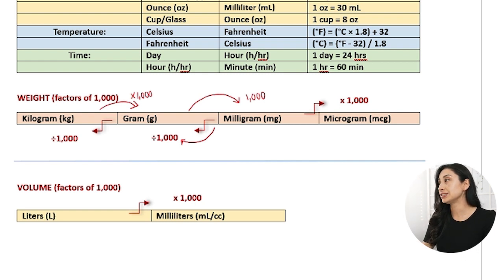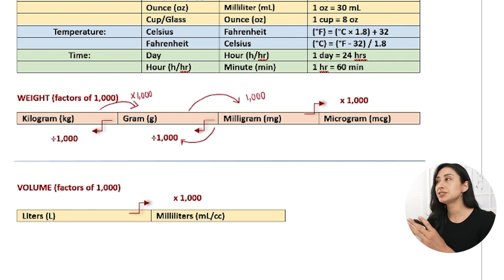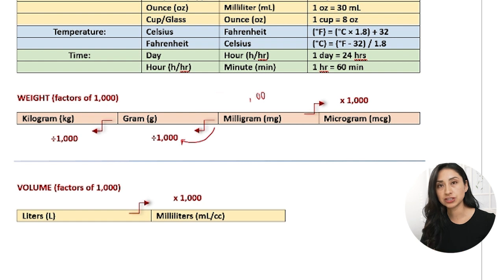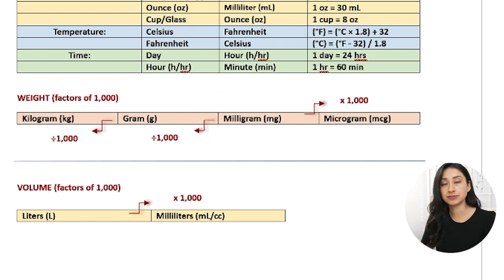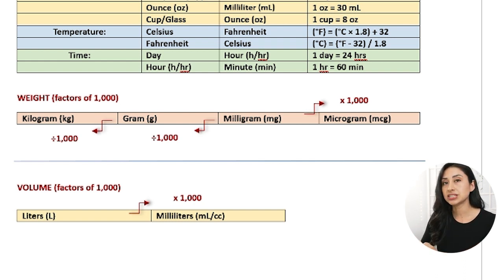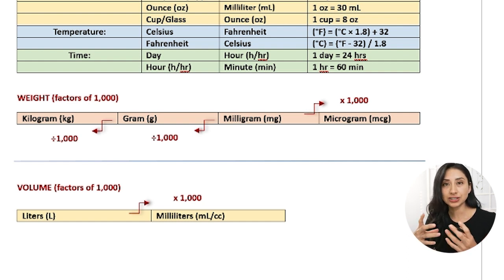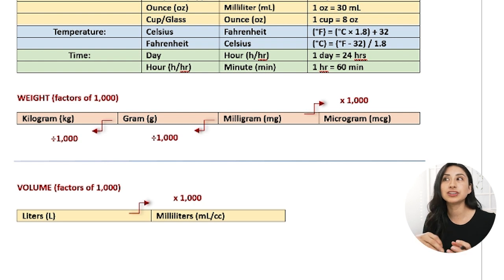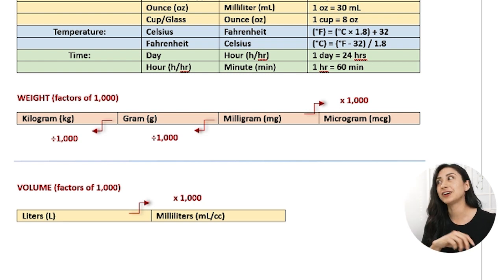The next concept you have to know in terms of memorization is knowing specifically which units are bigger and which units are smaller. That is part two of the second basic concept — memorization. Aside from knowing what to multiply and divide by, you also have to know which units are bigger and which are smaller, because if you don't, you're not going to know whether to make it bigger by multiplying or smaller by dividing.